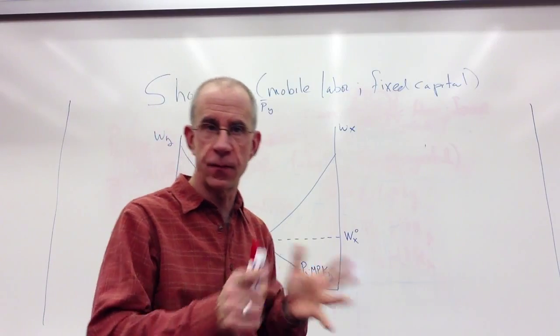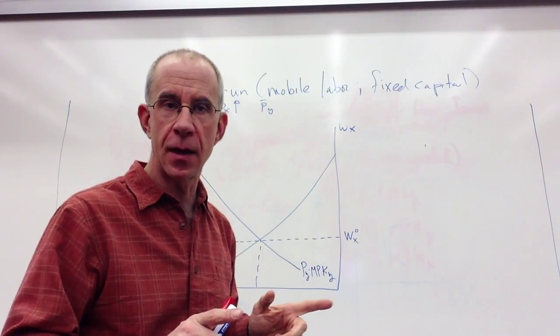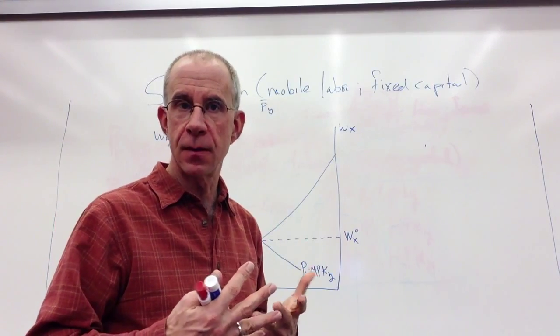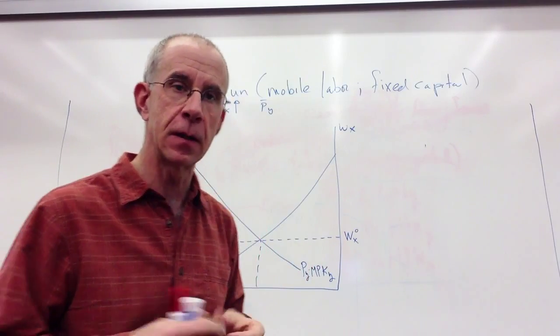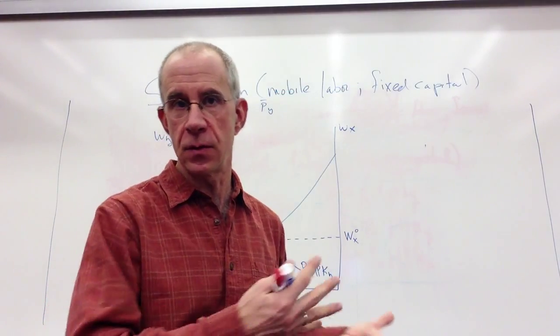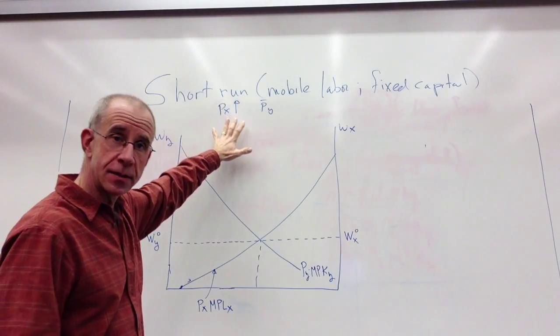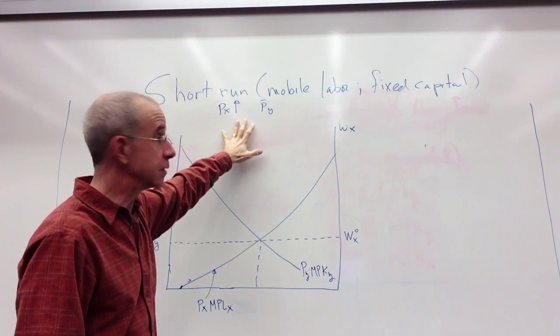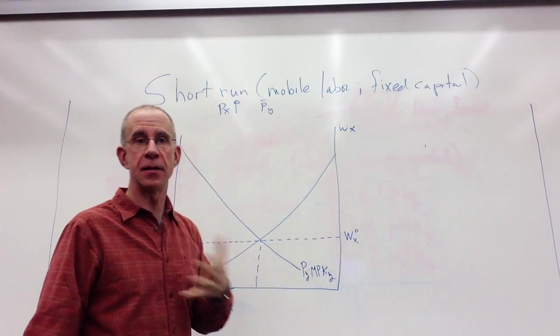So labor can move back and forth between industries, between firms, searching out higher wages. But capital can move between firms but not across industries because of some specific feature of the capital, the machinery, that can't be used in the other sector. We're going to be analyzing a situation where the price of X rises and the price of Y stays the same. Now, in a separate video, we've taken a look at how you can depict the various returns to labor and capital using this graph.